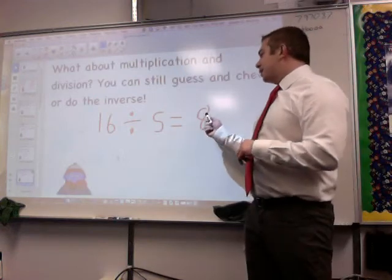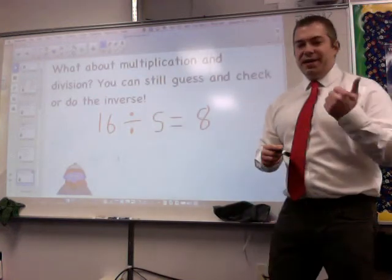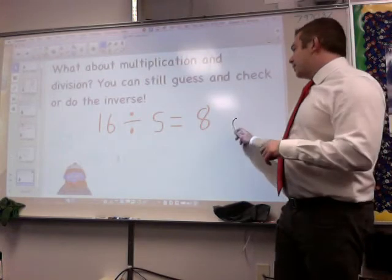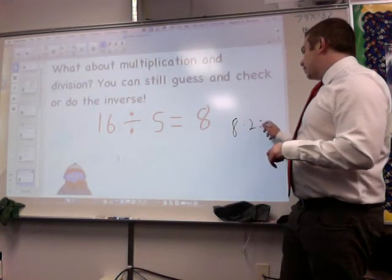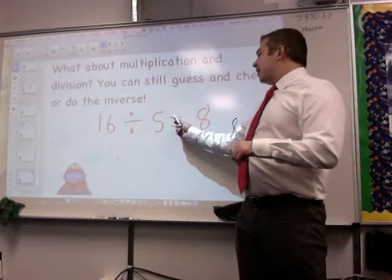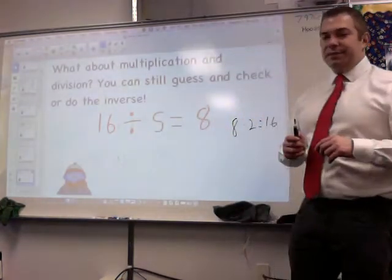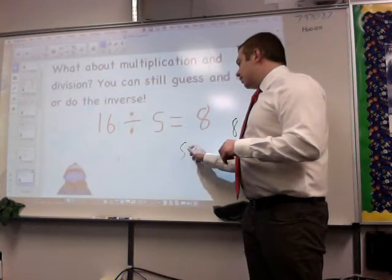But 16 divided by s equals 8, so 8 times something equals 16. I could also do 16 divided by 8 will equal s. But let's go backwards. 8 times what is 16? 8 times 1 is 8, 8 times 2 is 16. So because 8 times 2 equals 16, then 16 divided by 2 equals 8. So s equals 2.